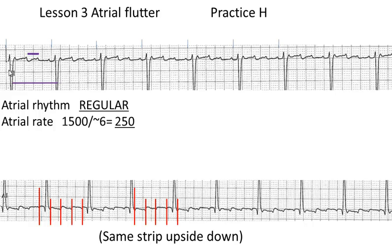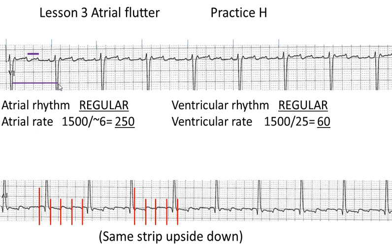The ventricular rate is very regular in this strip, with about 25 little boxes between QRSs, giving a nice regular rhythm of 60 beats per minute. If you took 60 times roughly four, you'd get approximately 240 — so you can see there's a relationship here between the flutter rate and the ventricular rate.